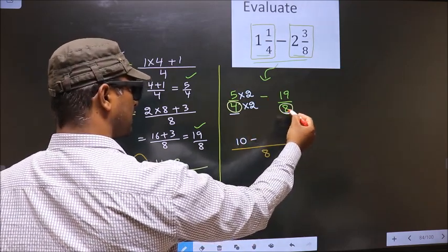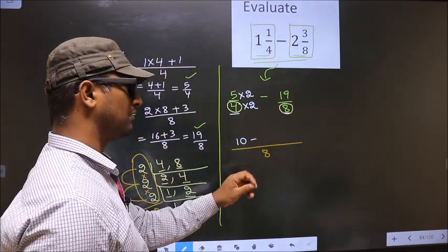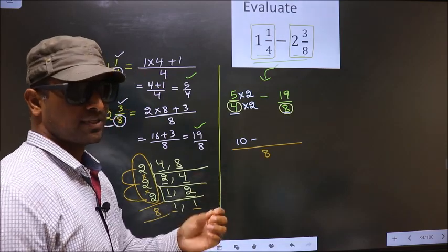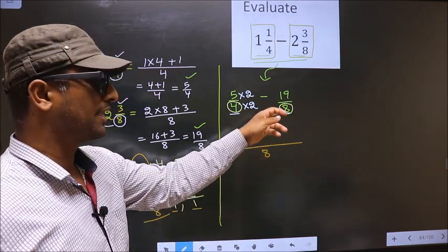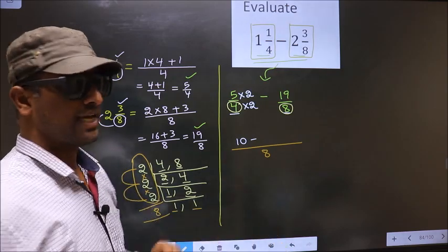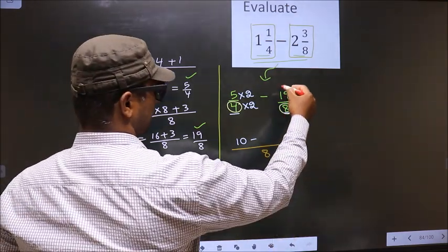Now, here it is 8. Here also we have 8. Both the numbers are same. So, we don't need to multiply any number to this one. So, we should write the numerator as it is. That is 19.